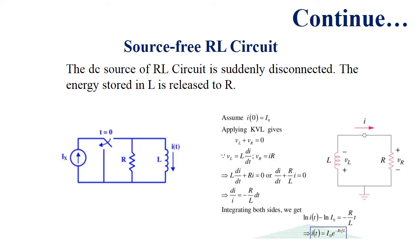Simplifying gives di/i equals minus(R/L)·dt. Applying integration on both sides yields the current as a function of time: i(t) equals I₀·e^(−Rt/L). This is the exponential factor in the current of the RL circuit.